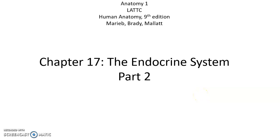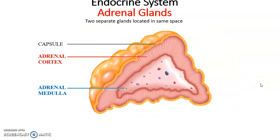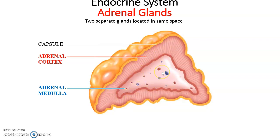Chapter 17, the endocrine system, part 2. Moving on to the adrenal glands — there are two adrenal glands, each one slightly superior to the kidneys. The adrenal glands are actually two separate glands found in the same structure. There's a dense connective tissue capsule surrounding the outer tissue — the adrenal cortex — which is one gland, and the inner tissue — the adrenal medulla — is a second gland.